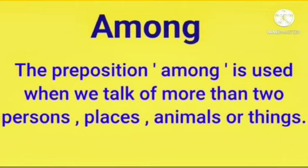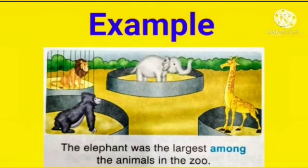The preposition 'among' is used when we talk of more than two persons, places, animals, or things. Example: The elephant was the largest among the animals in the zoo. Here, we are using the preposition 'among'.